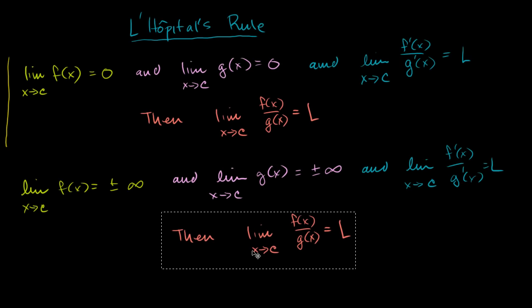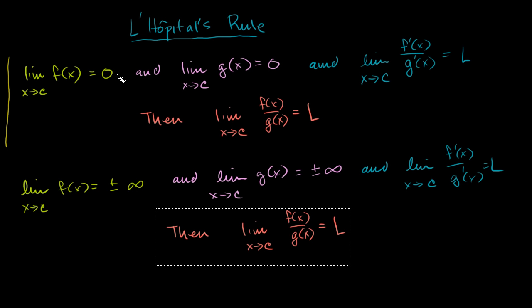In either of these two situations — just to make sure you understand what you're looking at — this is the situation where if you just try to evaluate the limit, you get 0 over 0, or the limit of f over the limit of g gives you 0 over 0, so you say you don't know what the limit is. But L'Hôpital's Rule says: if the limit of the quotient of the derivatives exists, then you can take the derivative of each function and evaluate that limit instead. The second case handles infinity over infinity or negative infinity over positive or negative infinity. These are the two indeterminate forms.